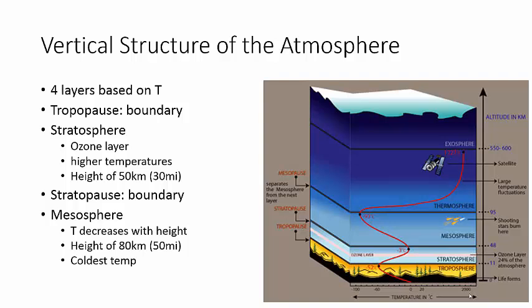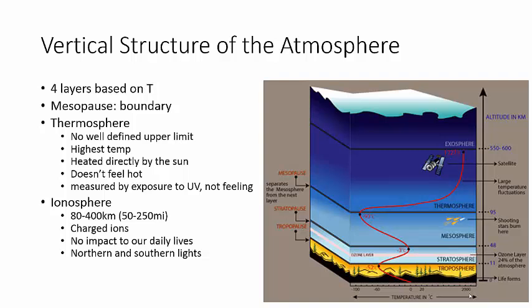Then you have the stratopause, which is basically the boundary. So, troposphere, tropopause. Stratosphere, stratopause. Now, next is the mesosphere. That's about it. I mean, the only remarkable thing about this is that it has the coldest temperatures. And then, the mesopause. The boundary.